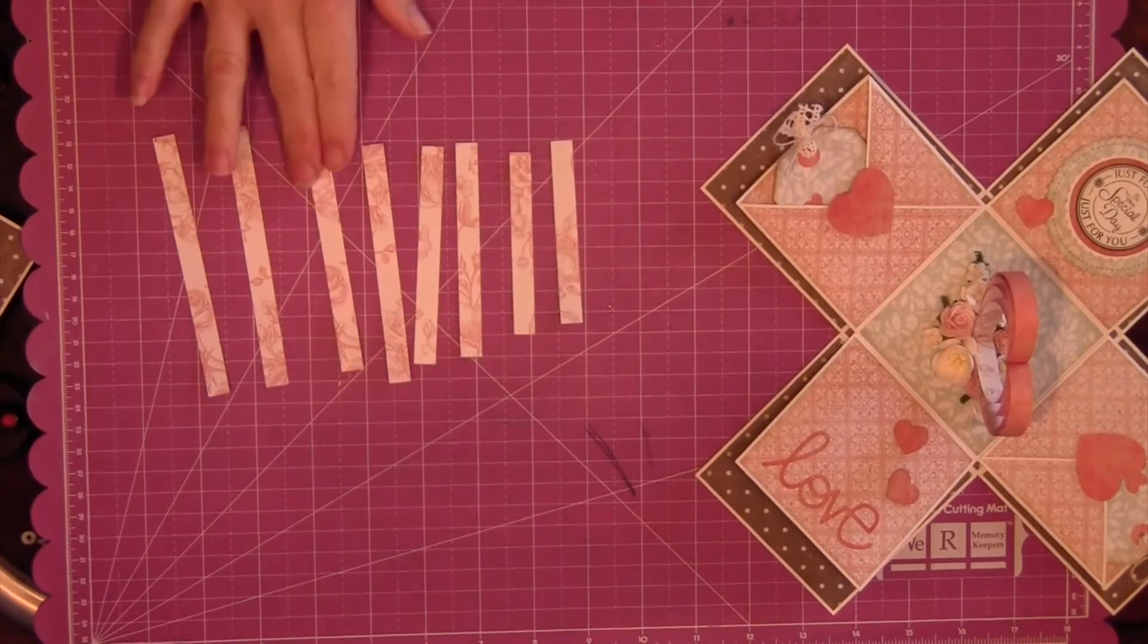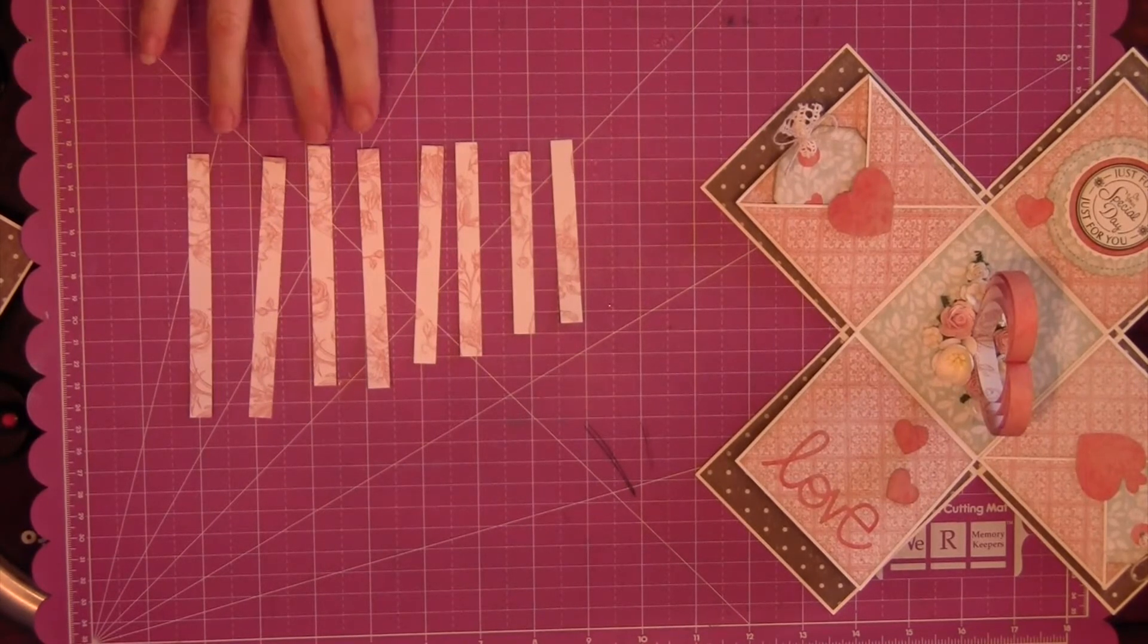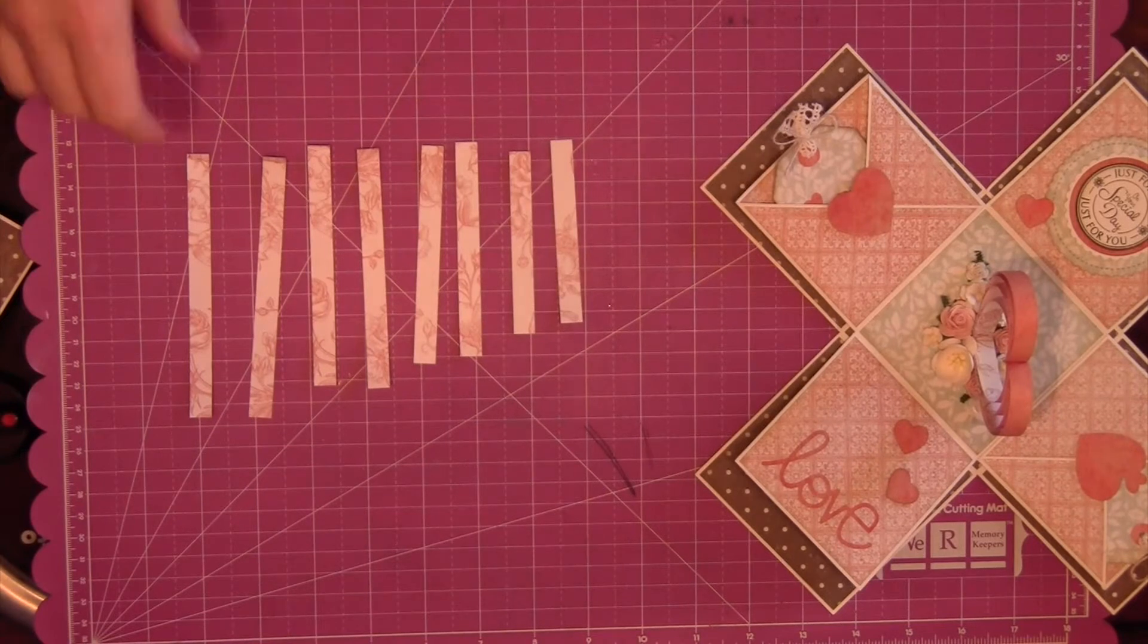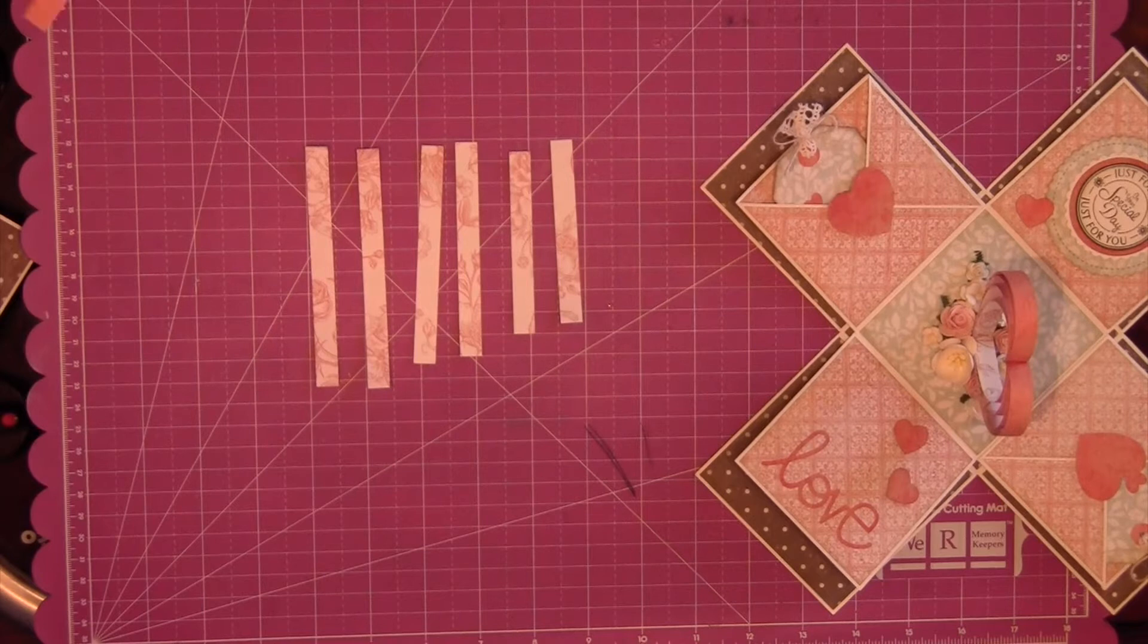The central heart in this design looks so impressive, but it's actually just made up of these eight one centimetre wide strips of paper. You need two 12 centimetres, two 11 centimetres, two 9.8 centimetres, and two 8.4 centimetres long.